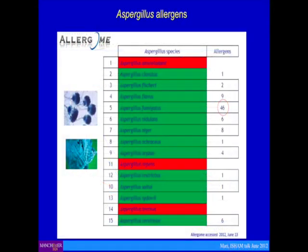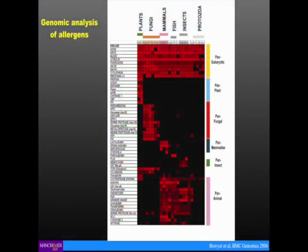Aspergillus is special for another reason: it has an extraordinarily high number of IgE-binding proteins. Aspergillus fumigatus has 46 IgE-binding proteins, compared to one in the cat and two in the house dust mite. This is an incredibly allergenic organism. Genomic analysis shows that some of these proteins are shared across all kingdoms — pyridoxin, heat-labile proteins, manganese superoxide dismutase — while others are shared only among fungi, and others are plant allergens. This means there is inevitably quite a lot of cross-reactivity, which reduces specificity of some tests.